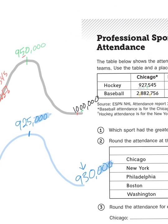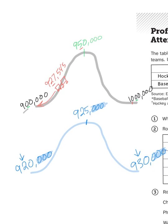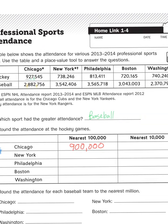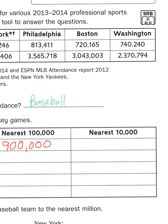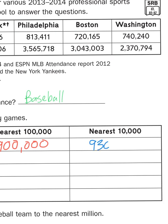The number of folks who attended a Blackhawks game in the 2013-2014 season was 927,545. Nine hundred and twenty-seven is bigger than 925, so 927,545 sits above the halfway mark on the right side of the hill. That roller coaster car has gone up and over the hill, and gravity pulls it to the right. So whereas rounding 927,545 to the nearest hundred thousand rounds down to 900,000, rounding it to the nearest ten thousand rounds up to 930,000.